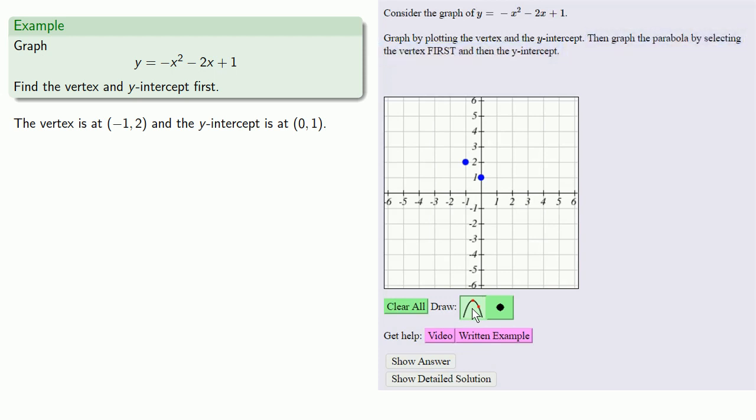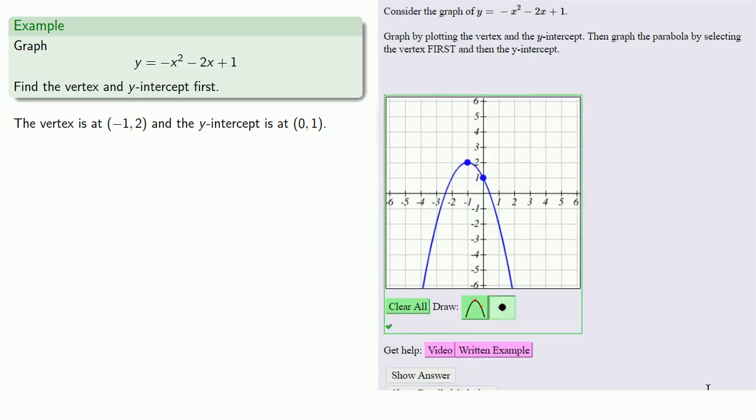We'll move to the vertex. As we move to the other point, MyOpenMath will try to track the parabola. Be careful not to select that second point until you're sure it's correct. We'll move to that second point and select it, submit, and get our green check mark.